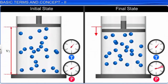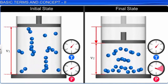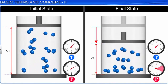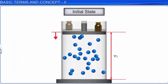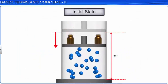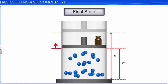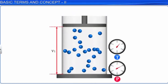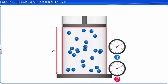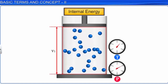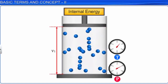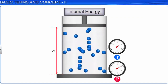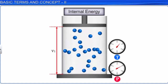When the state of a system changes, it implies that some thermodynamic process has occurred on the system, and energy has been either added to it or removed from it. The energy stored within a substance or a system is known as the internal energy of the system. In other words, internal energy is the sum of all the possible kinds of energy of the system, and is represented by capital U.